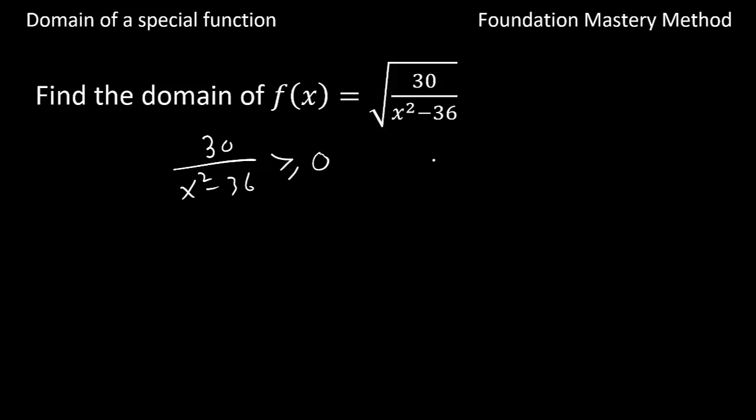The denominator is x squared minus 36. Let me solve this first. So we get x squared equals 36, then x will be plus or minus the square root of 36, which is plus or minus 6.